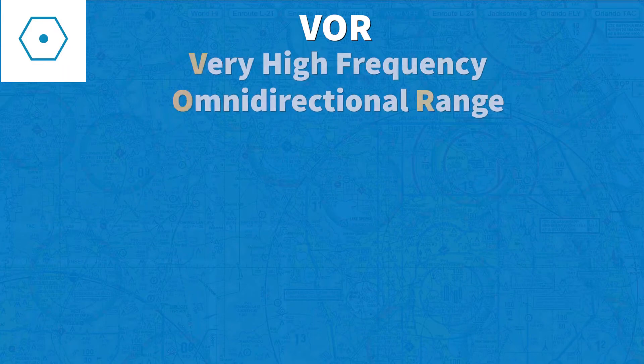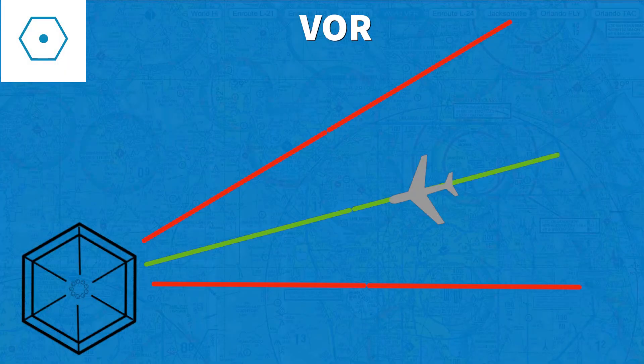The first symbol that you will find is the VOR symbol. It consists of a blue hexagon with a dot in the middle and represents a very high frequency omnidirectional range radio station, or VOR. This transmits signals on all 360 degrees, and the pilot chooses to fly to or from the station and in which of these degrees.